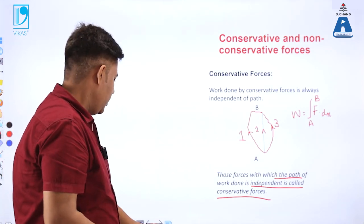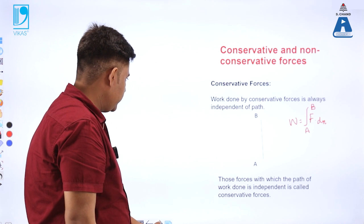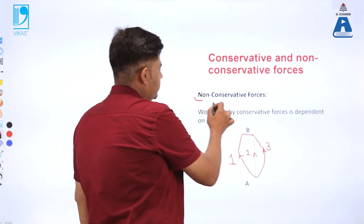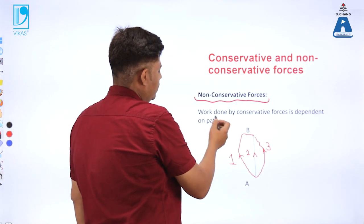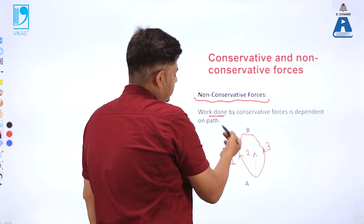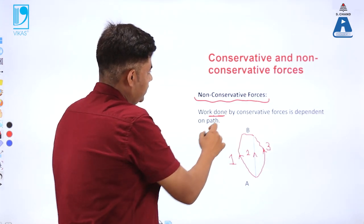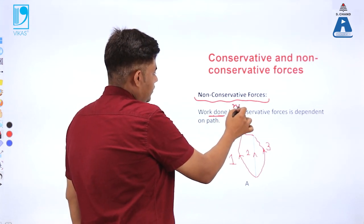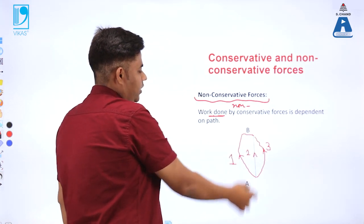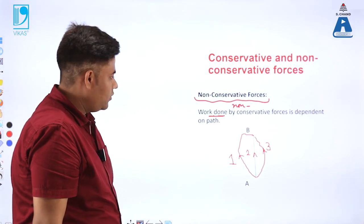For non-conservative forces, the work done is dependent on the path followed. When a force is non-conservative, it does not depend upon points A or B but rather upon the path that is being followed by the body.